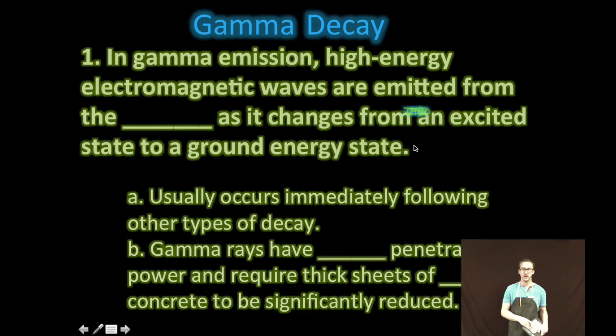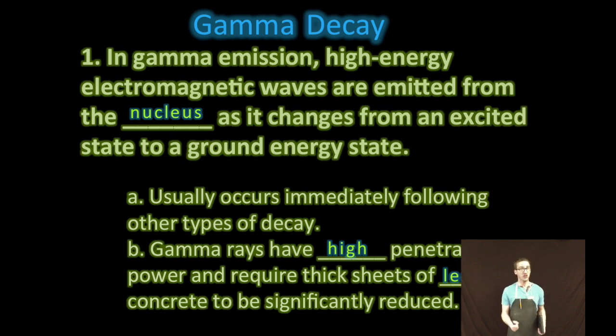Which brings us to our third type of radioactive decay, also known as gamma decay. Here we have high energy electromagnetic waves that are emitted from the nucleus as it changes from an excited state to a ground state. So not a particle, but a high energy wave. This usually occurs immediately following other types of decay.